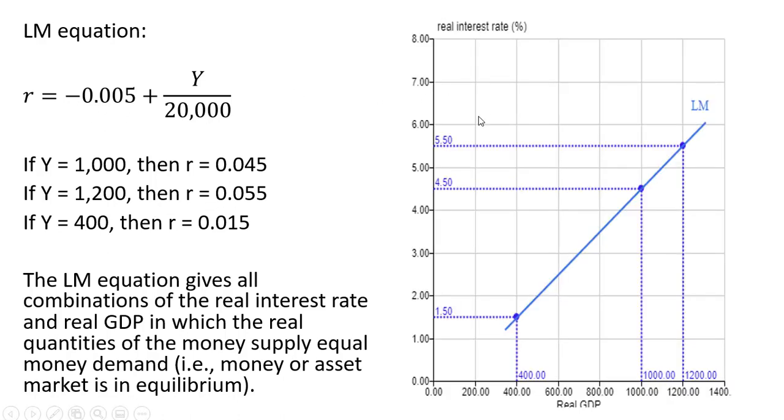If we were to graph this equation, this is what the graph would look like. So Y is 400, the real interest rate is 1.5%. Y is 1,000, real interest rate is 4.5%. If Y is 1,200, real interest rate is 5.5%. Okay, that's it. I hope you found this video helpful. Thank you.